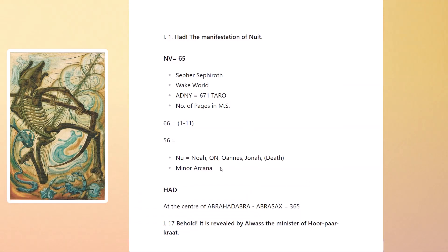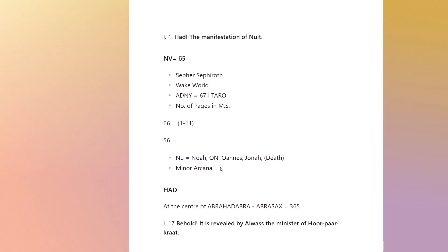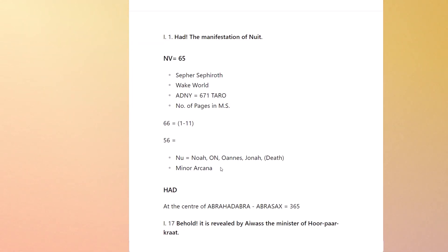The Death card is in the Sea of Binah, and the Death card represents Saturn. There are plenty of connections between the Death card and the number 56. Part of this workshop is to talk about how you can integrate your knowledge of tarot and the Book of Thoth with the Book of the Law quite easily — it's not hard to do. Crowley's kind of putting these things in there anyway.